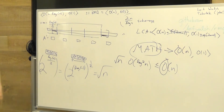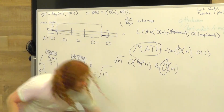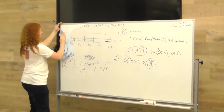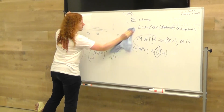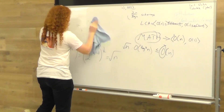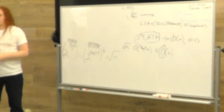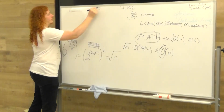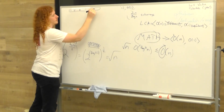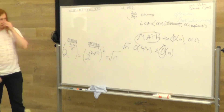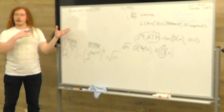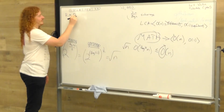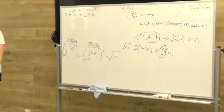So LCA is order N preprocessing, order one query — done! Now let's solve general RMQ. We solved plus or minus one RMQ — the constrained problem we get from the LCA reduction. For a general RMQ problem, there could be any gap between individual cells, so we can't unify all the sub-arrays into the same naive data structures. Solution: turn it into LCA!